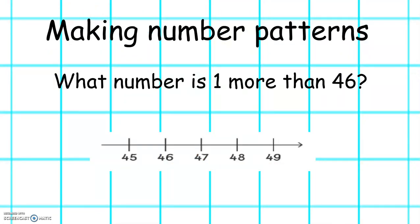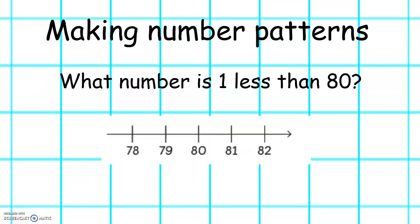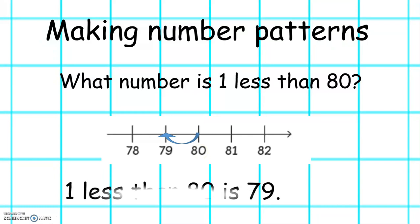We can use our number patterns to see which numbers are one more and one less than a number. What number is one more than 46? Let's find number 46. One more than 46 is 47. And what number is one less than 80? Here is 80. One less than 80 is 79.